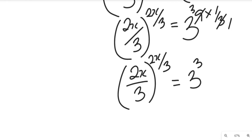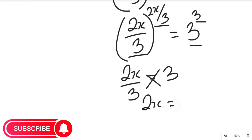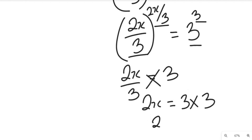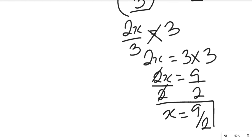Now we notice that we have the same base and the same exponent on both sides. Since we have the same base and the same exponent, we equate them: 2x divided by 3 equals 3. Cross-multiplying gives us 2x equal to 3 times 3, so 2x equals 9. Dividing both sides by 2, we get x equal to 9 divided by 2.